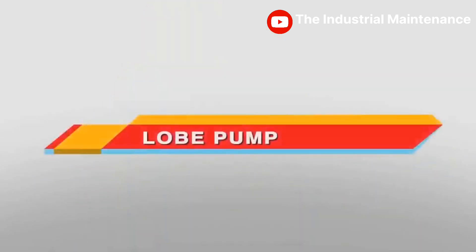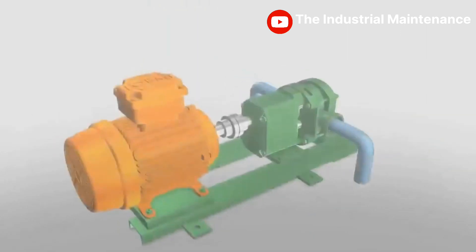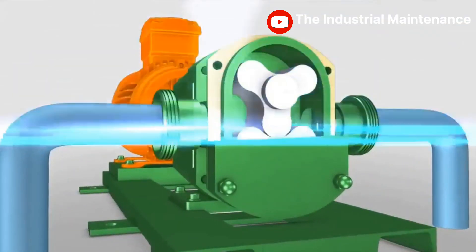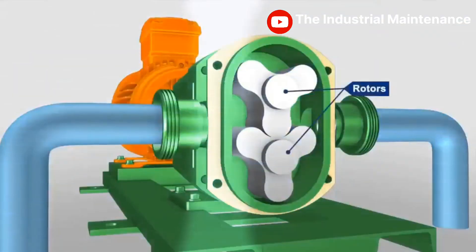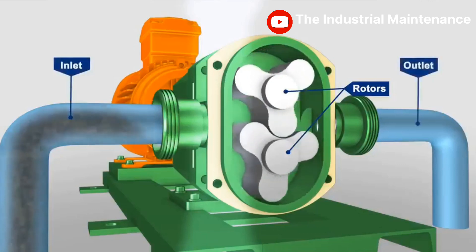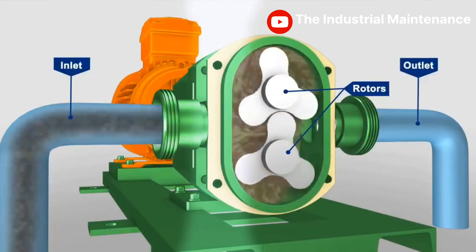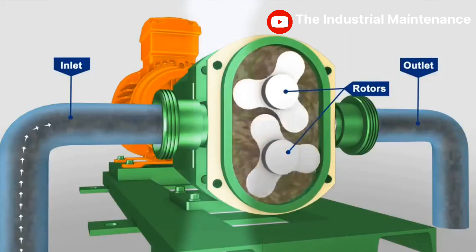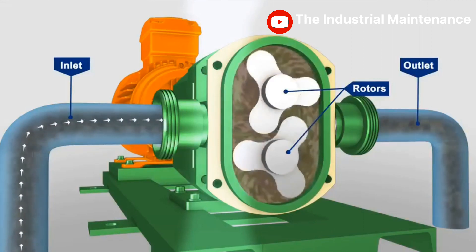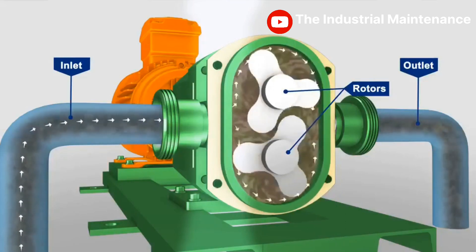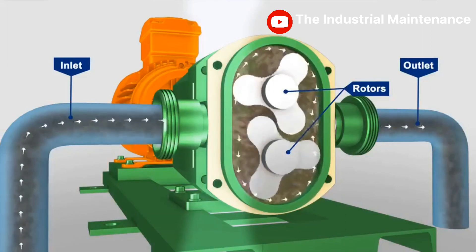The lobe pump receives its name from the rounded shape of the rotor radial surfaces, which permits the rotors to be continuously in contact with each other as they rotate. Lobe pumps can be either single or multiple lobe pumps, and carry fluid between their rotor lobes much in the same way as the gear pump does.